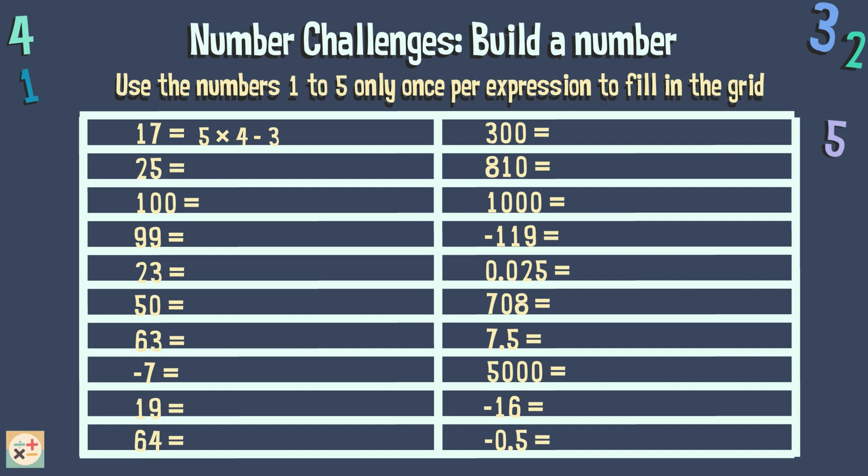Or, for a trickier one, let's make 99. 5 squared, multiplied by 4, then subtract 1. Note that squaring uses up the number too.